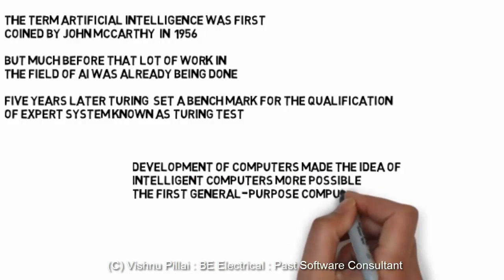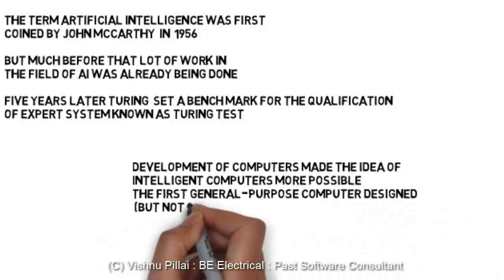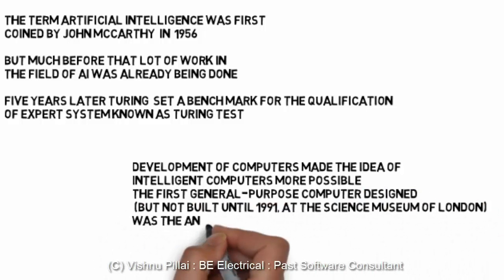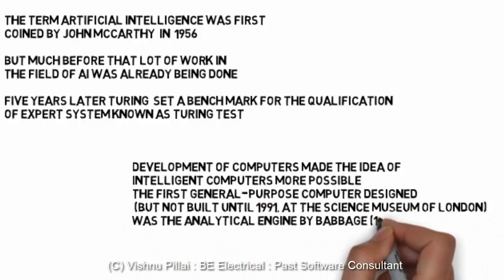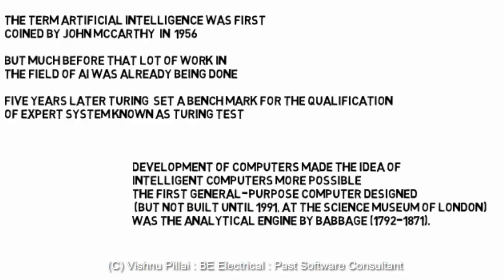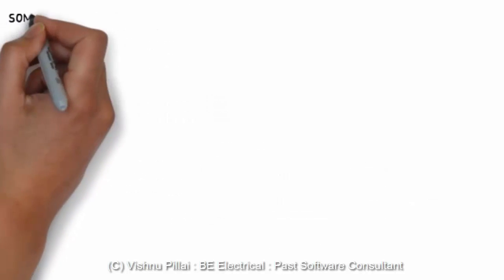Development of computers made the idea of intelligent computers more possible. The first general purpose computer was designed early on, but not completed until 1991 at the Science Museum of London. Artificial Intelligence was designed by Babbage, who lived from 1792 to 1871.